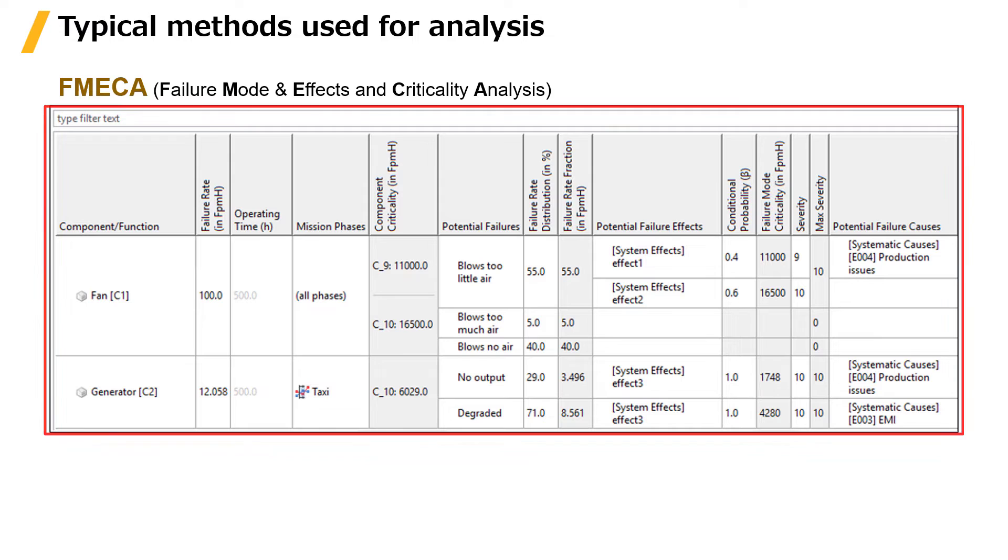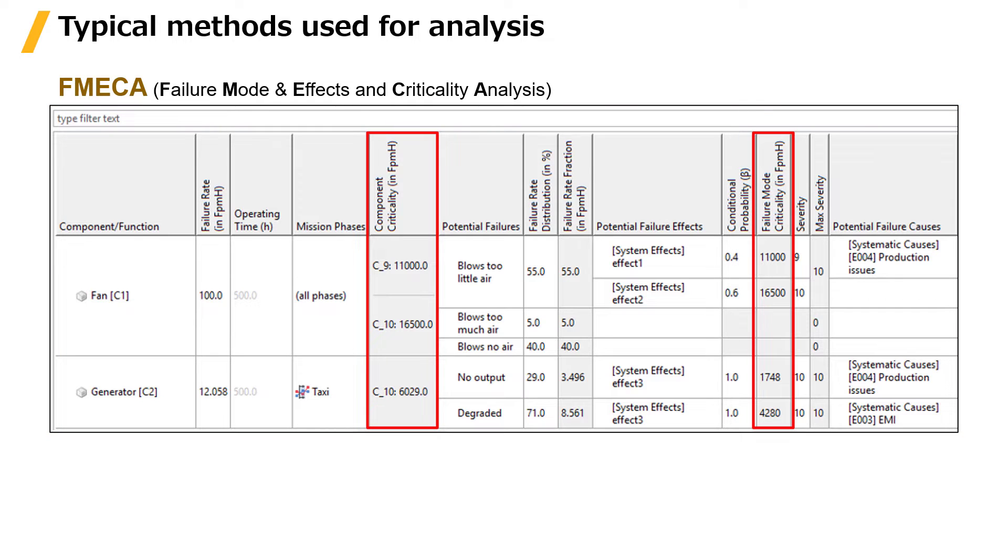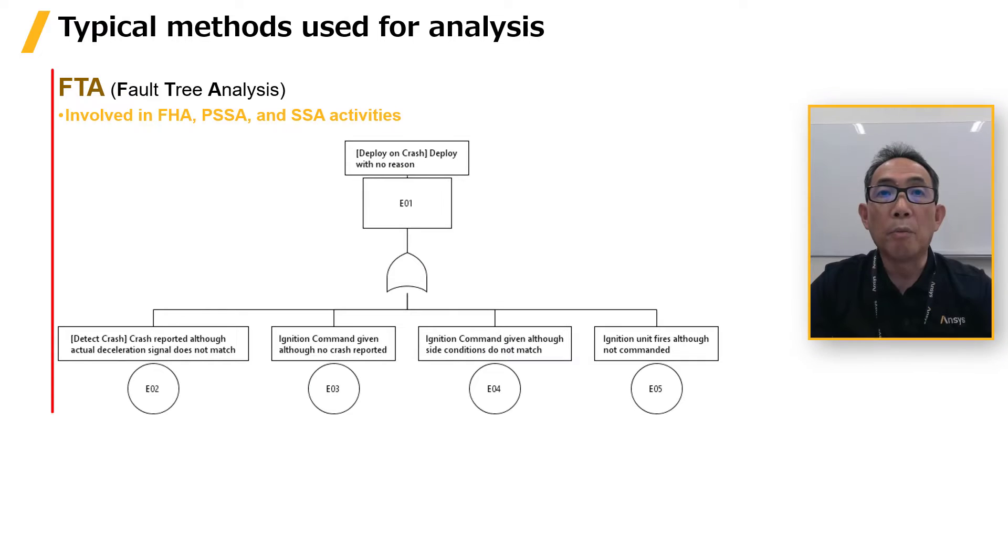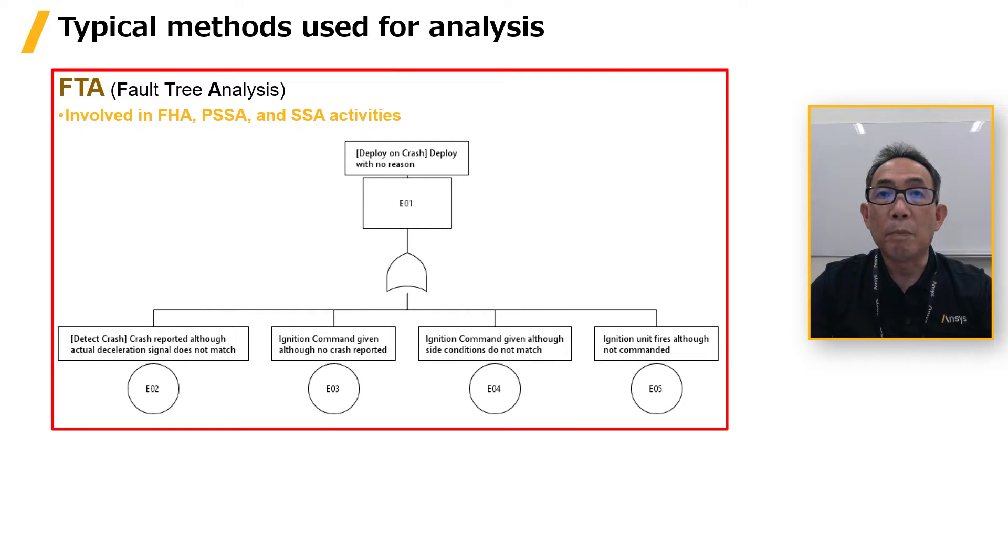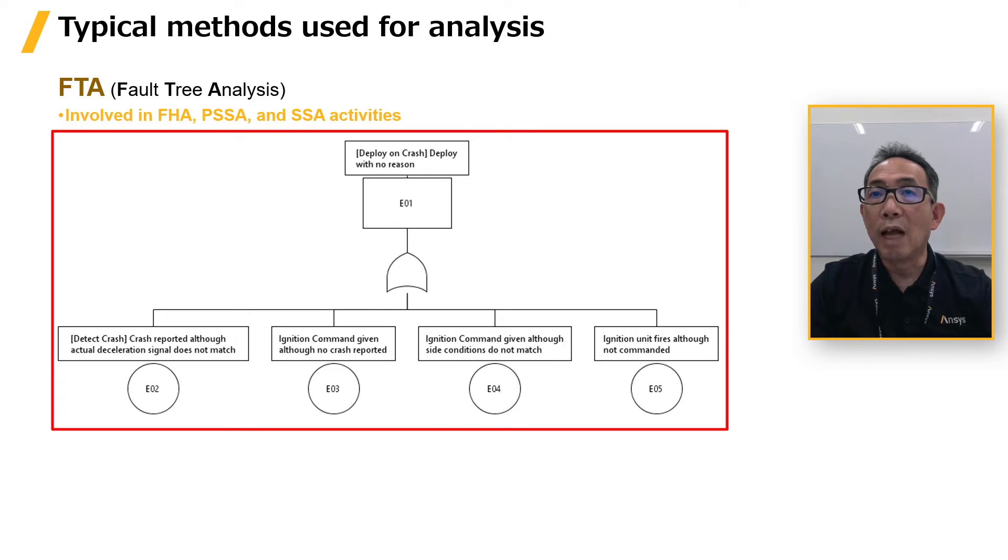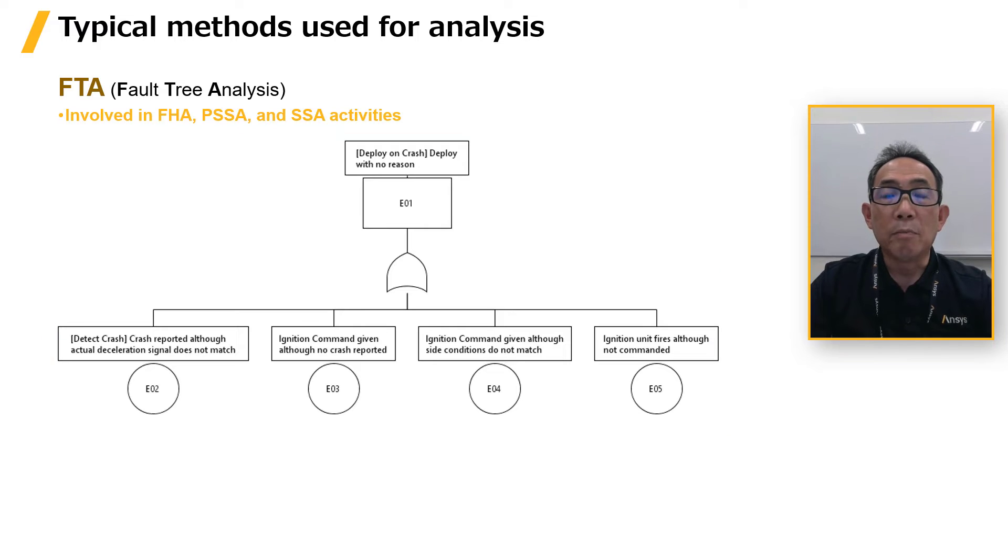FMECA adds criticality to the FMEA as an element. FTA is a method of fault analysis using specialized tree diagram called Fault Tree and the acronym for Fault Tree Analysis. It was invented by Bell Laboratories in 1961 and standardized internationally as IEC 61025 in 1990.